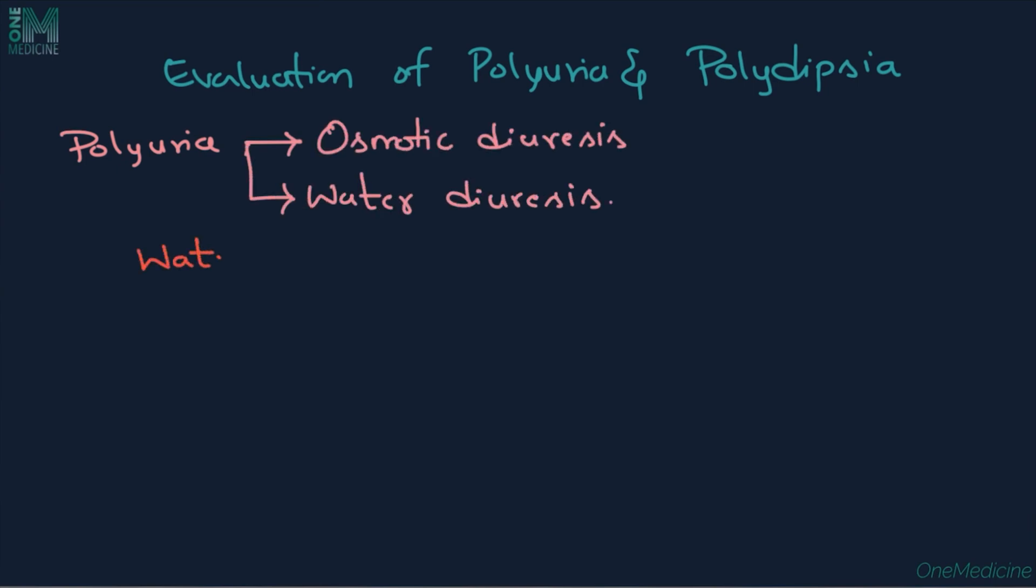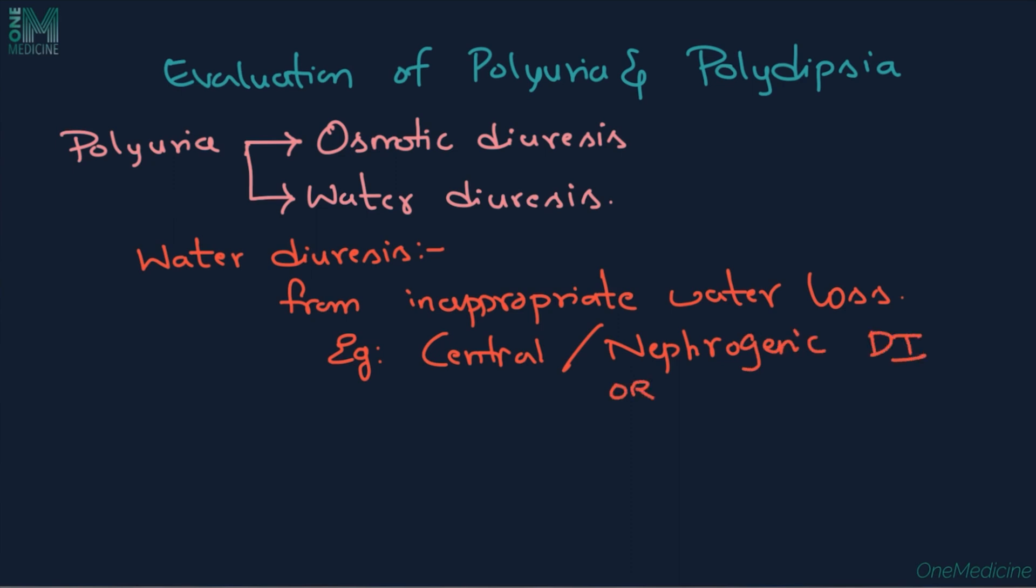In turn, a water diuresis may result from inappropriate water loss as in either central or nephrogenic diabetes insipidus, or may represent appropriate water loss as in primary polydipsia.